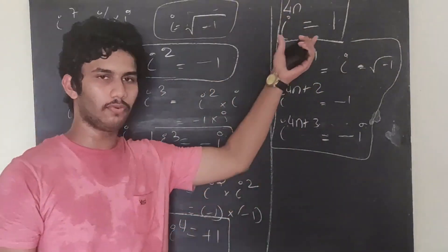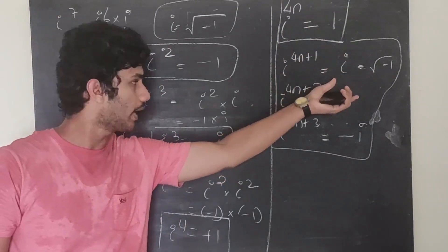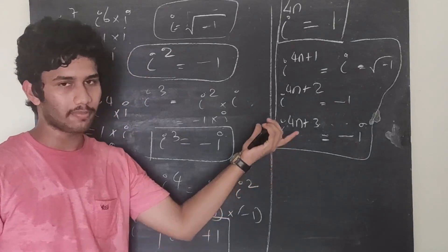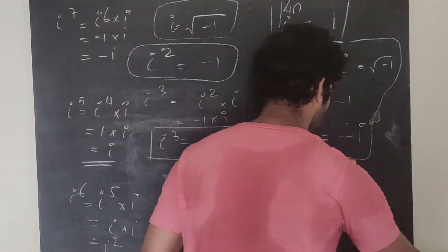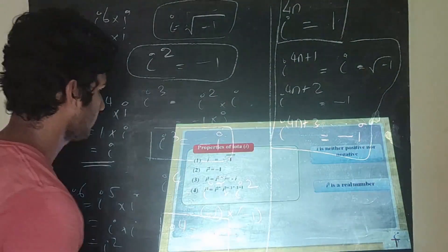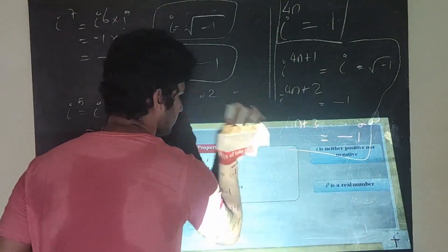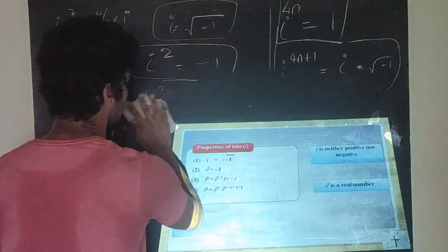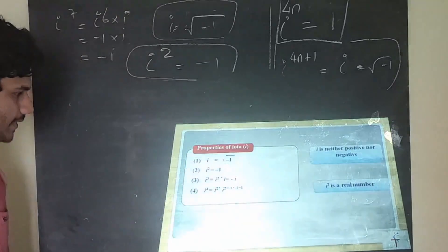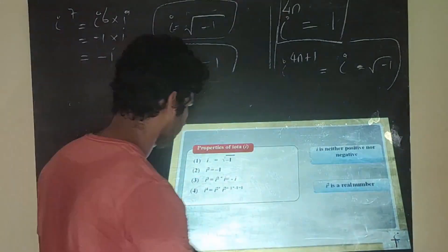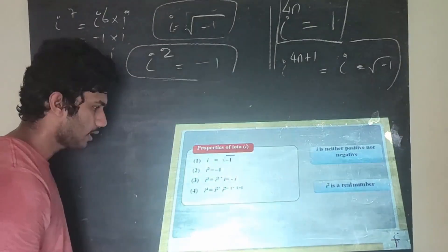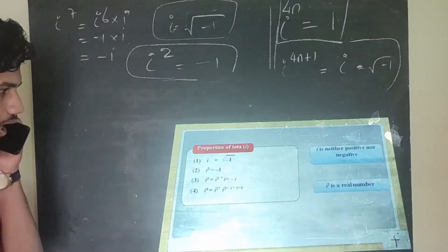Summary of iota properties: i = √(−1), i² = −1, i³ = −i, i⁴ = 1. The cycle repeats with period 4: i^(4n) = 1, i^(4n+1) = i, i^(4n+2) = −1, i^(4n+3) = −i.